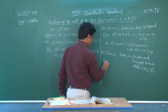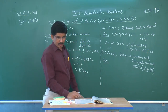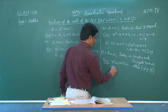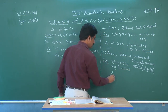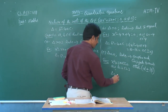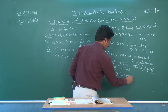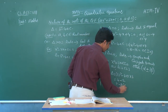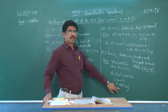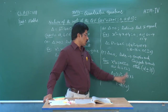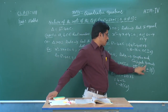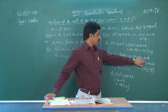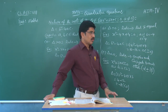An example: x squared plus 2x plus 3 equals 0. A equals 1, B equals 2, C equals 3. Delta equals B squared minus 4AC equals 4 minus 12, equals minus 8. It is less than 0. So the roots are complex and conjugate to each other, where one root has plus and the other has minus.